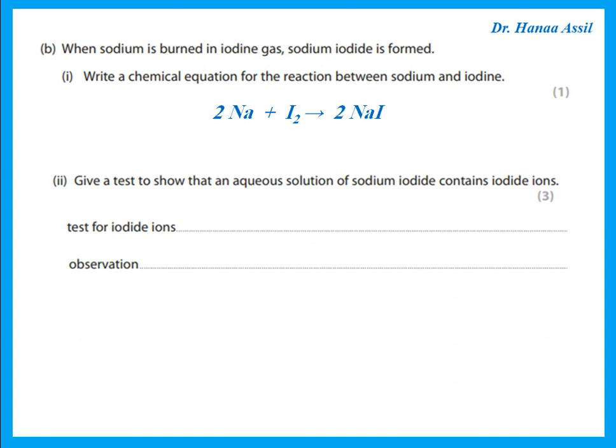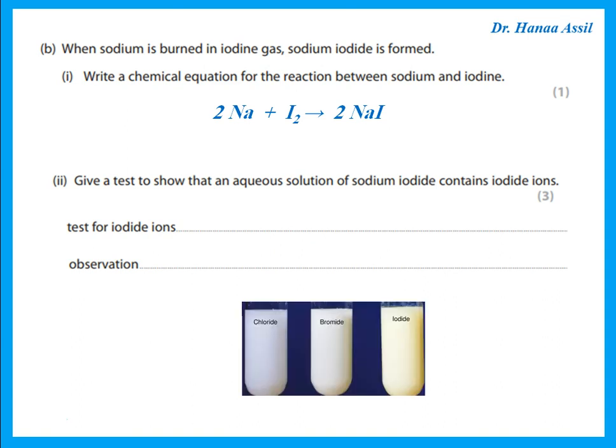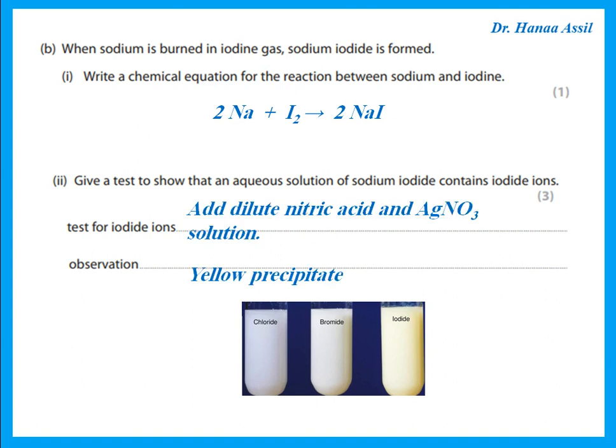Give a test to show that an aqueous solution of sodium iodide contains iodide ions. The test for any halide — chloride, bromide, iodide — is to add dilute nitric acid and silver nitrate solution. We end up with a yellow precipitate if we're talking about iodide.